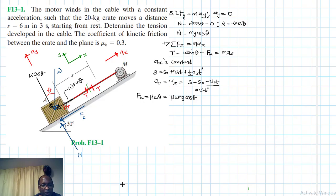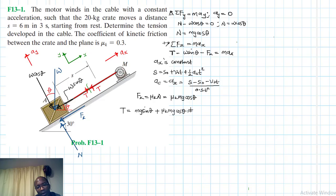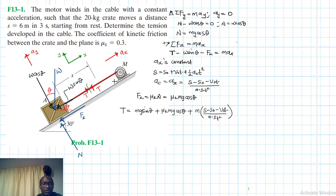Therefore T equals M·G·sin θ plus the friction component μk·M·G·cos θ, plus the acceleration component M·[(s − s₀ − v₀·t) / (0.5·t²)]. At this point we have solved the problem in general form. But let's look at how the tension itself progresses from static equilibrium to dynamic equilibrium.